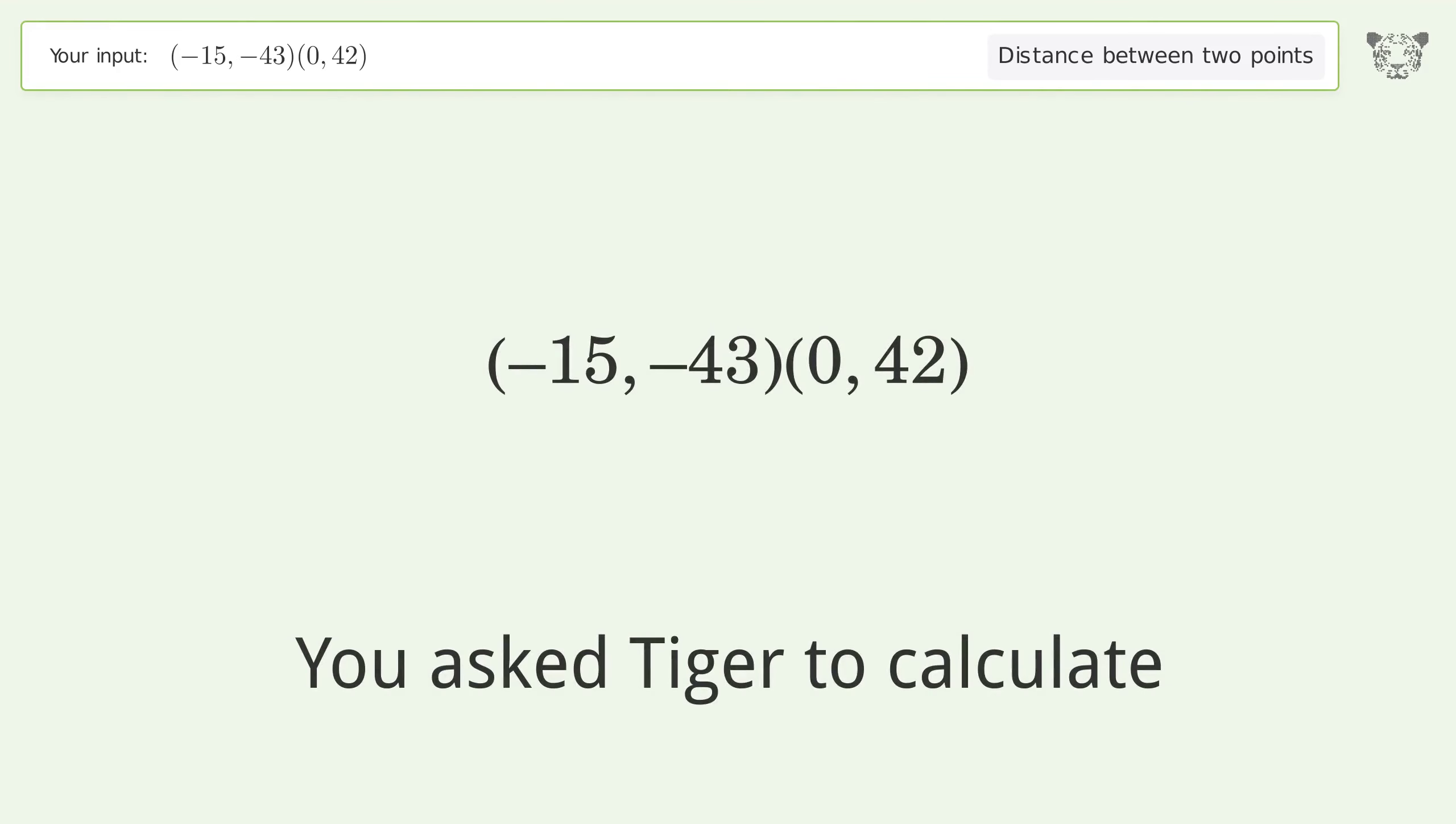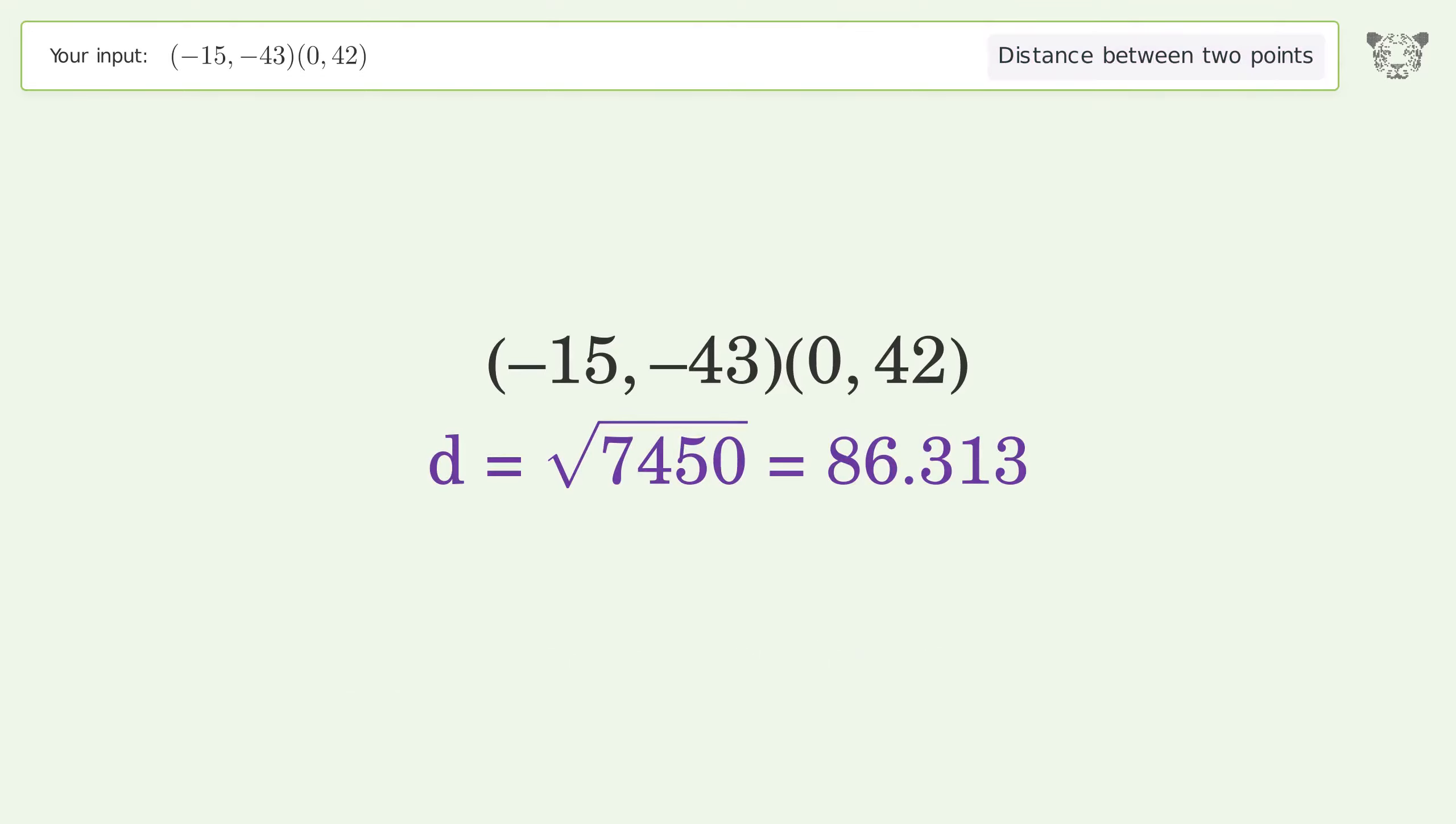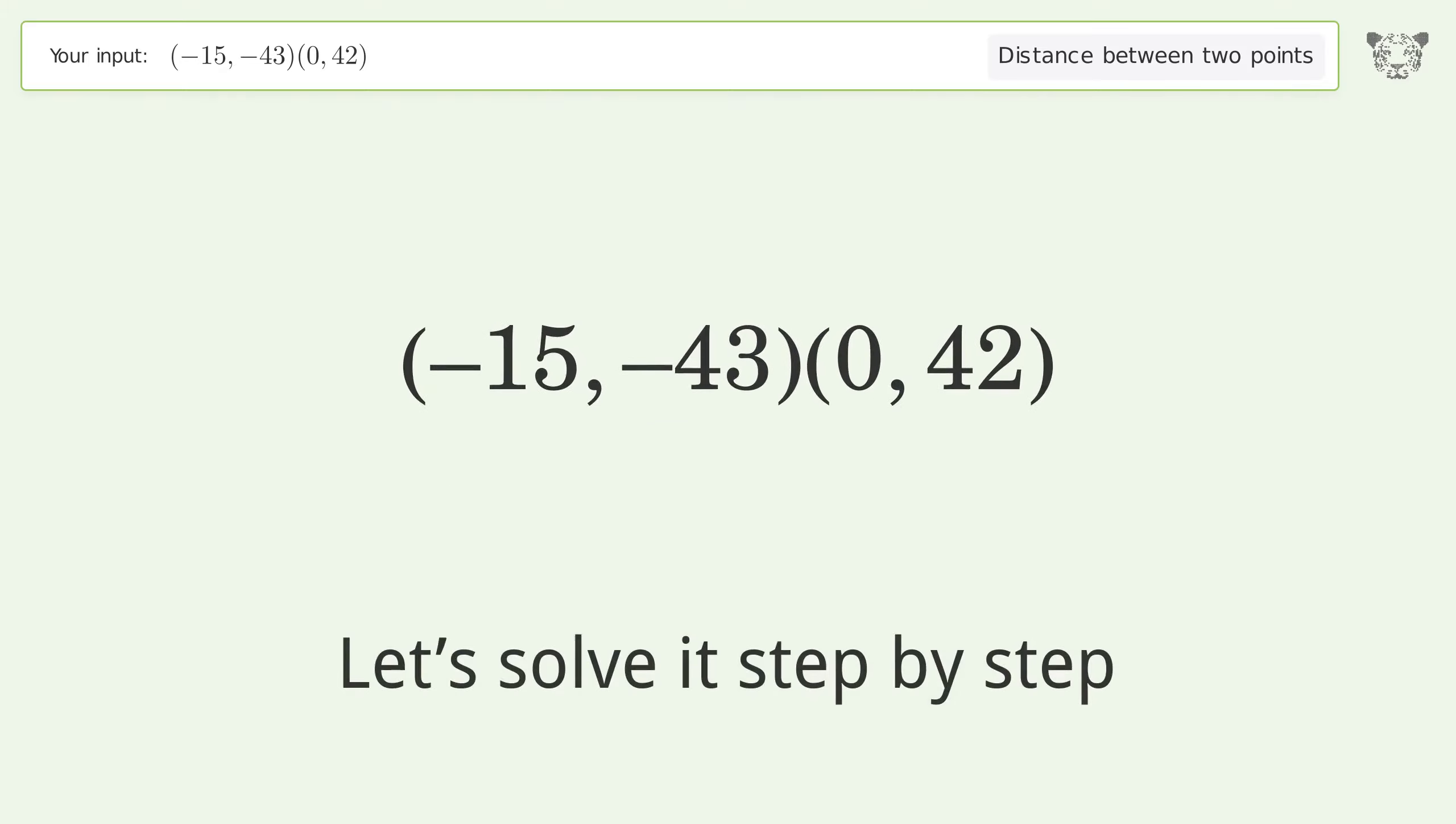You asked Tiger to calculate the distance between two points. The distance between the two points is the square root of 7450 or 86.313. Let's solve it step by step.